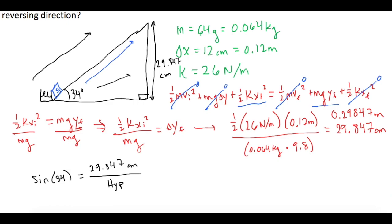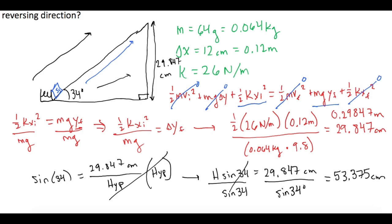But we want the hypotenuse. So if we times both sides by the hypotenuse, we get h sine 34 equals 29.847 centimeters. And then we divide both sides by sine 34. Sine of 34 degrees gives us, in centimeters, a hypotenuse, or how far the ice cube goes is 53.375 centimeters. So rounded is 53 centimeters.